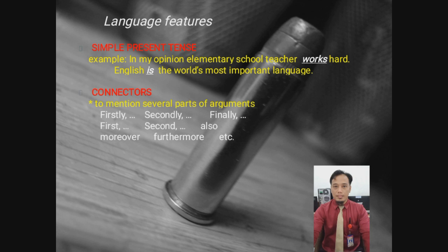For the connectors to mention several parts of arguments, usually they use: firstly, secondly, and finally. First, second, also, moreover, furthermore. Itu adalah kata-kata penghubung yang digunakan untuk menyebutkan bagian dari argumennya — ada pertama, kedua, ketiga, keempat, akhirnya, atau pertama, kedua, hingga lebih jauh lagi, dan seperti itu.